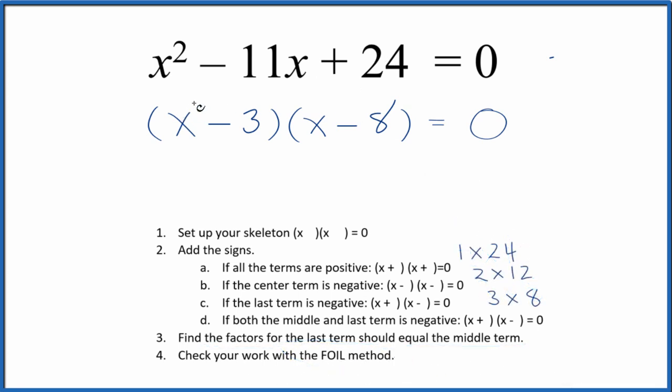So we multiply the first, the outside, the inside, and then the last. We can combine the negative 8x and the negative 3x, and this is the same as we got earlier. So we've correctly factored the equation x squared minus 11x plus 24.